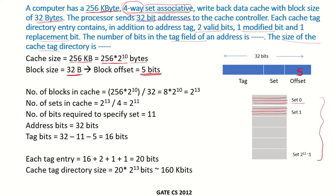How many blocks are there in the cache? The total size, which is 256 into 2 to the power of 10, divided by the block size, gives us 8 into 2 to the power of 10, which is 2 to the power of 13. These are the total number of blocks in the cache. But since these blocks are arranged as sets with 4 blocks per set, the total number of sets comes out to be 2 to the power of 11.